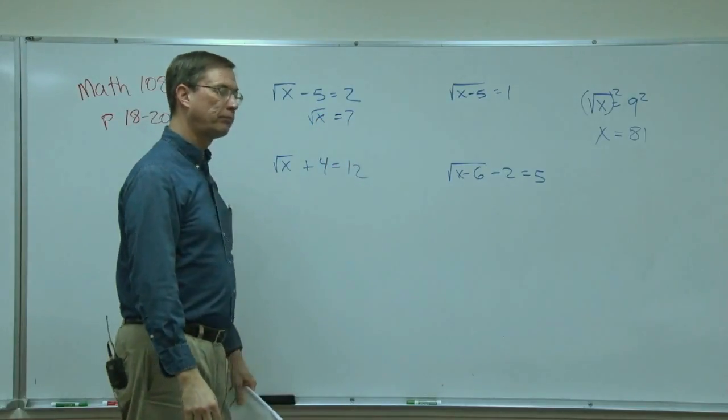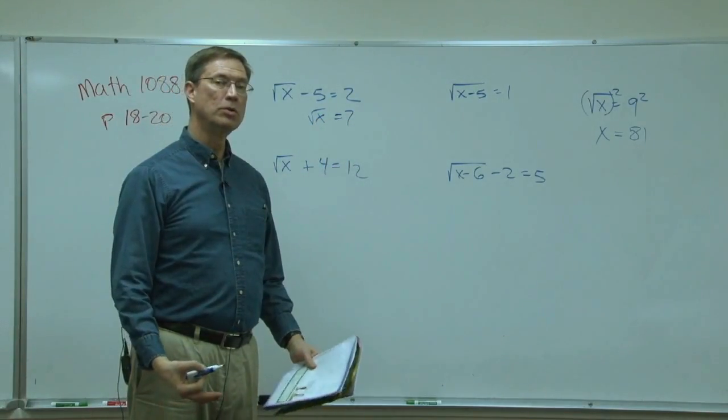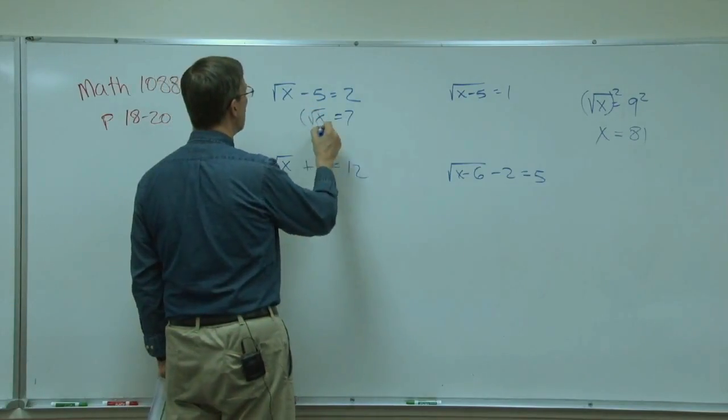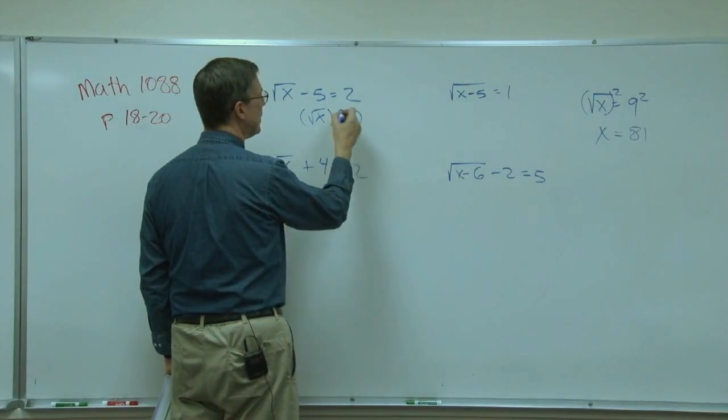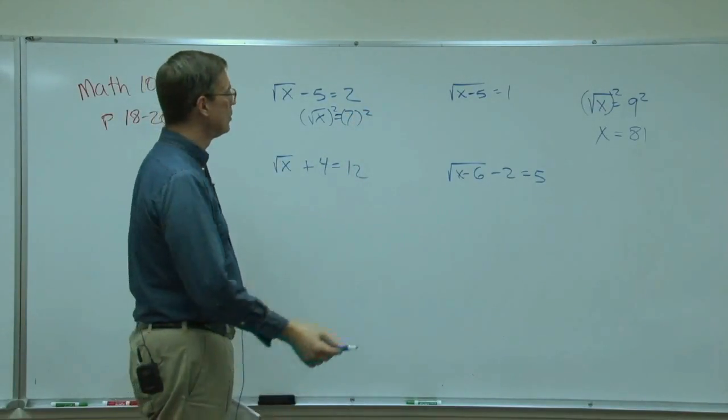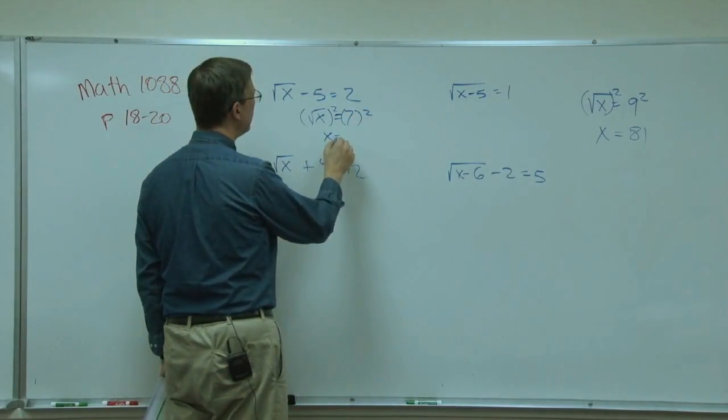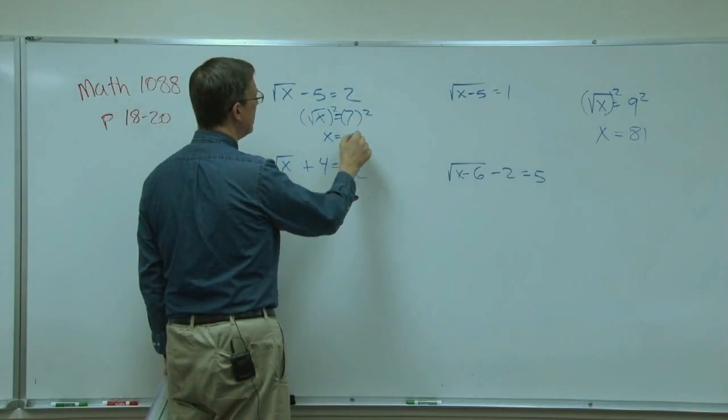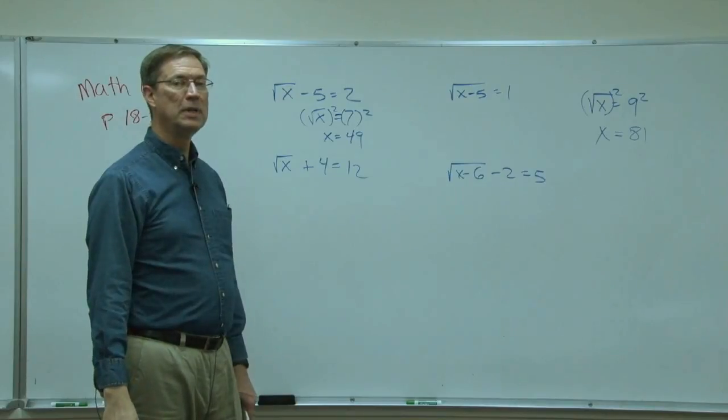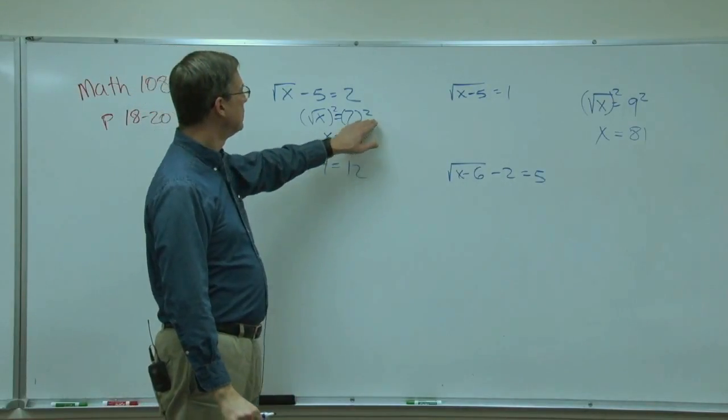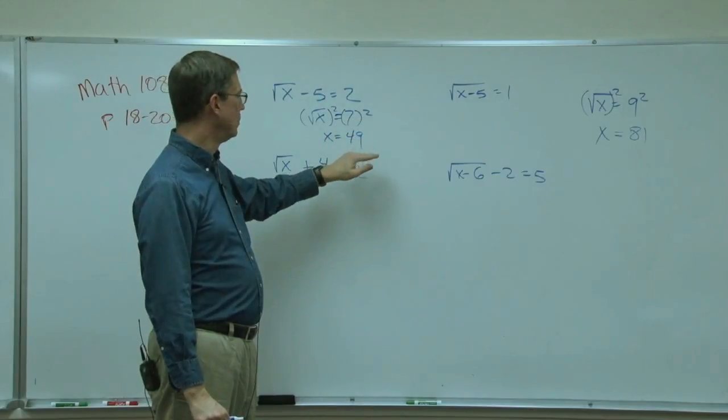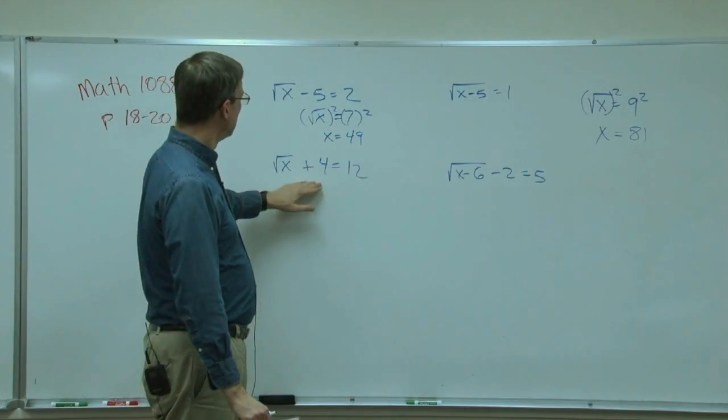And remember to undo the square root, we square both sides, so I like to put parentheses around both sides like that and go squared, squared, and now just solve it. So here the x pops out, 7 squared is 49. I hope you're not even thinking of 14 anymore and that when you see squared you are thinking 7 times 7, not 7 times 2. So we get 49.